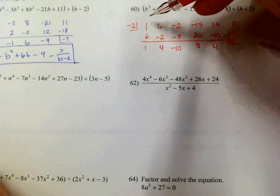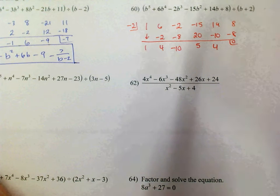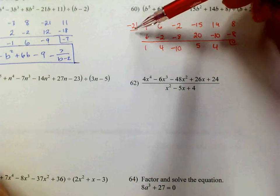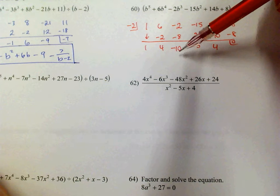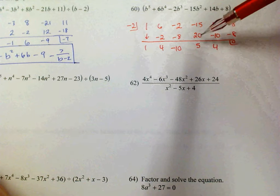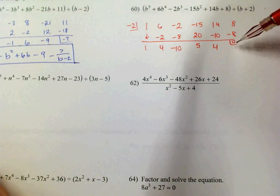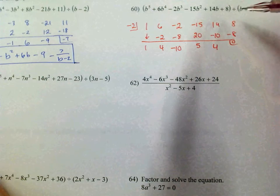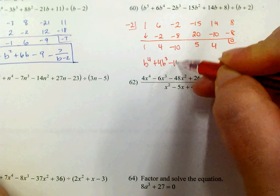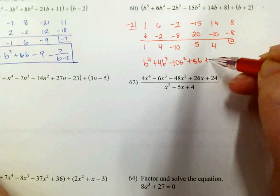The opposite of positive 2 is negative 2. The leading coefficients are 1, 6, negative 2, negative 15, 14, and 8. Drop the 1. Negative 2 times 1 is negative 2. Add, you get 4. Negative 2 times 4 is negative 8. Add, you get negative 10. Negative 2 times negative 10 is 20. Add, you get positive 5. Negative 2 times 5 is negative 10; 14 minus 10 is 4. Negative 2 times 4 is negative 8, remainder 0. I started with the power of 5 and divided out 1, so I'm at the power of 4: b to the 4th plus 4b cubed minus 10b squared plus 5b plus 4. And that is my answer.